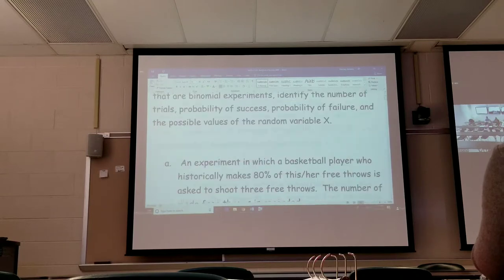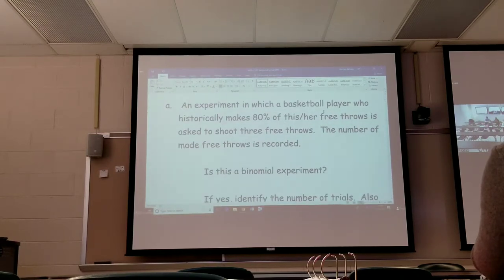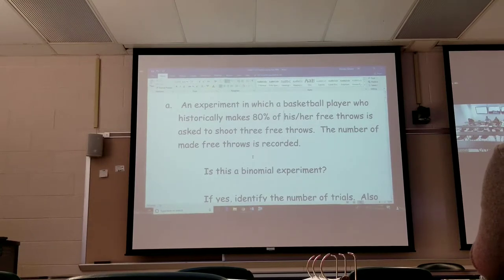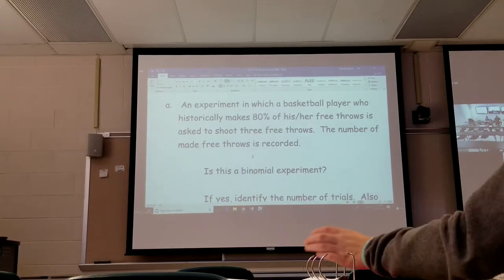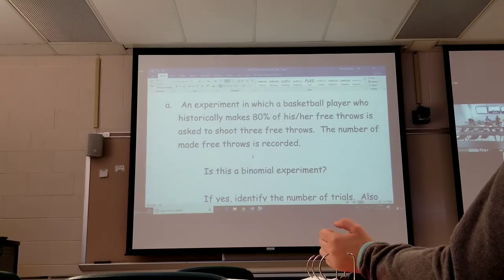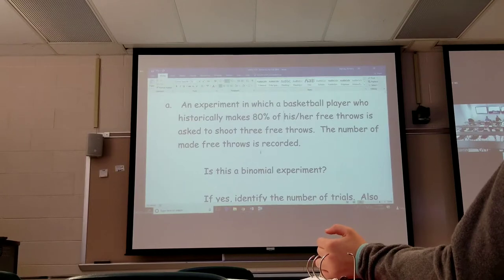This is where we come back to the basketball player. An experiment with a basketball player who historically makes 80% of their free throws is asked to shoot three free throws. The number of made free throws is recorded. They actually do this several times. Have this player shoot three, record it, shoot three, record it, shoot three, record it, until they get enough data to actually tell how often the player is going to miss three, make one, make two, or make all three. That's what our table went back to.